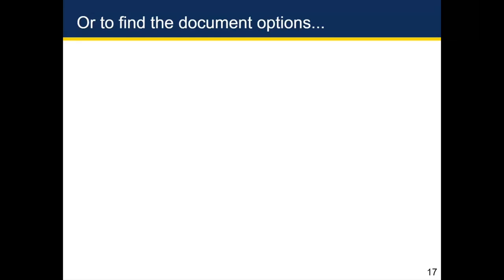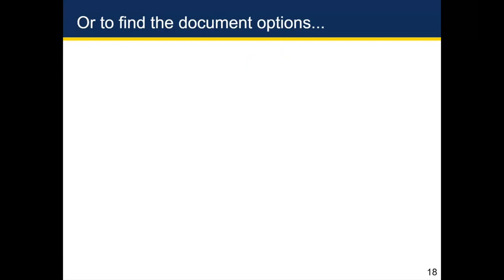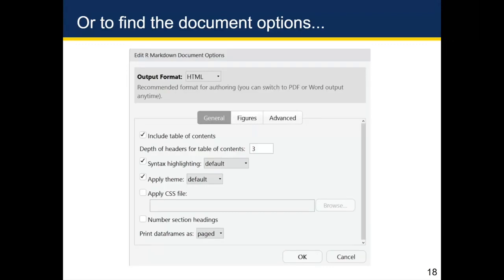If you forget how to add a table of contents and don't want to do it by hand, another option is to click the settings button next to the knit button and go down to Output Options. You'll see that the output format is HTML, and there's a checkbox for 'Include table of contents.' By default it's unchecked, but clicking it will automatically edit the header to add the table of contents.